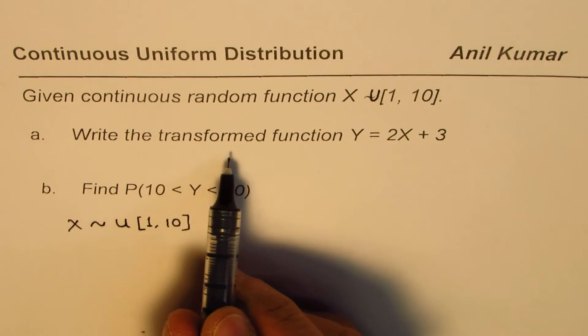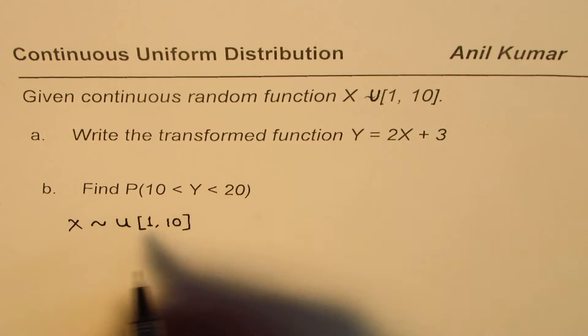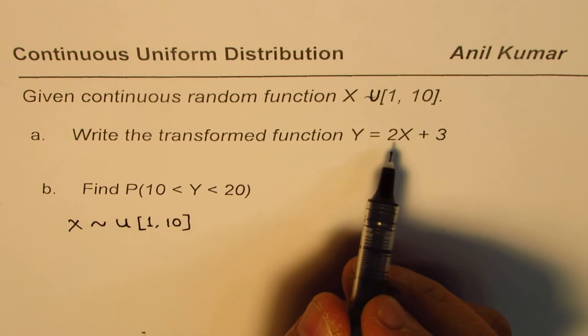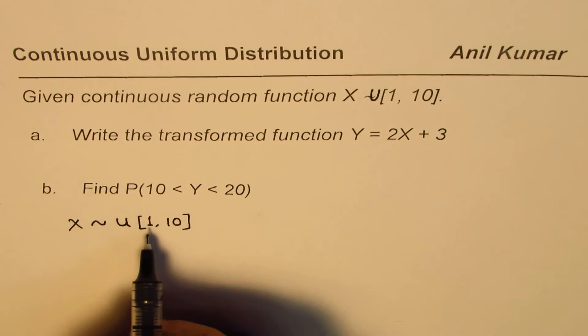Now we need to write this transform function Y in these terms, Y equals 2X + 3. So let's find the lower and the upper bound for Y, which we can get from these values, 1 and 10 of X.